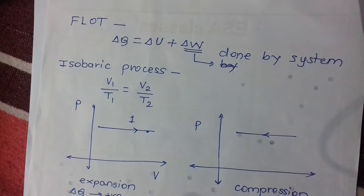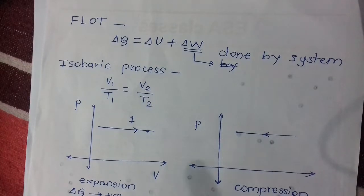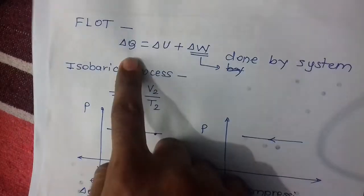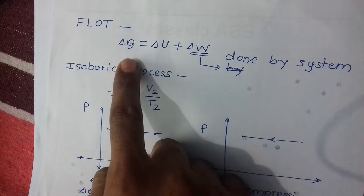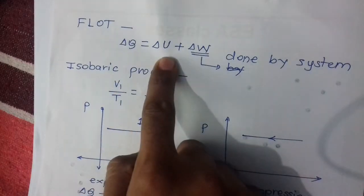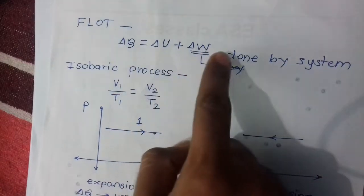First law of thermodynamics: ΔQ equals the energy provided, which equals the change in internal energy plus work done (ΔQ = ΔU + W).